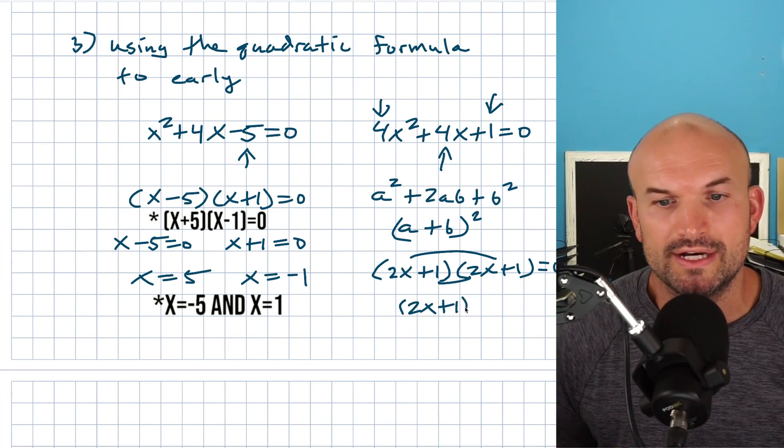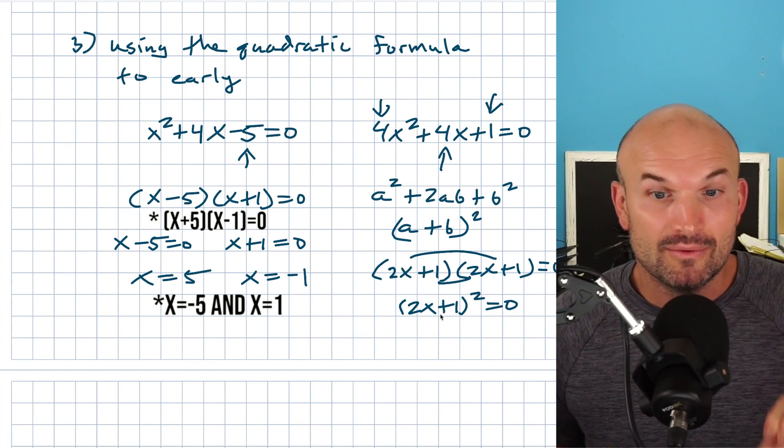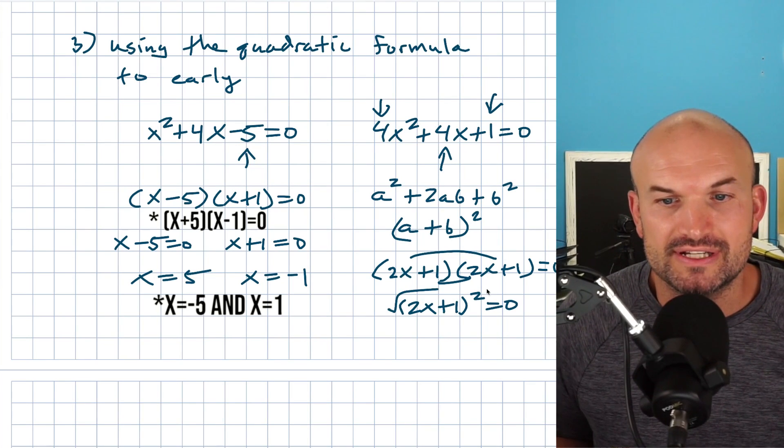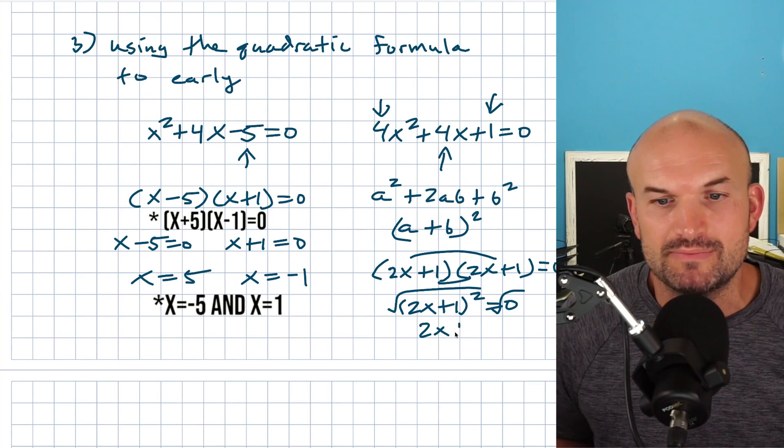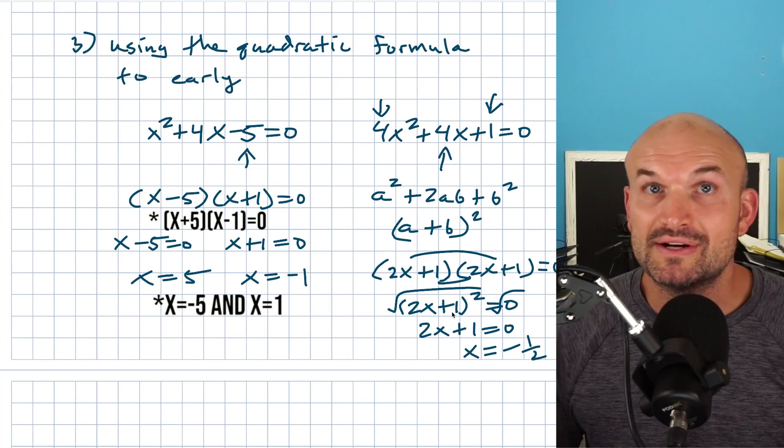we'd have a two X plus one quantity squared is equal to zero. Notice I only have one X now, right? So now I can use my inverse operations. And then you could just take the square root of both sides. You get a two X plus one equals zero. And then you could say X equals a negative one half. So there we go.